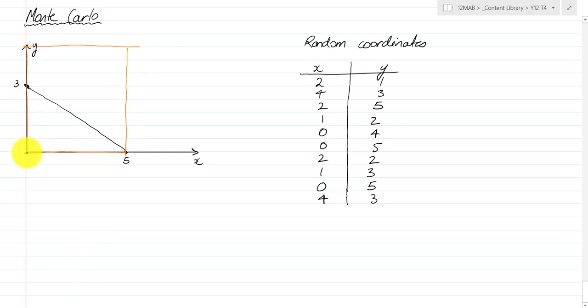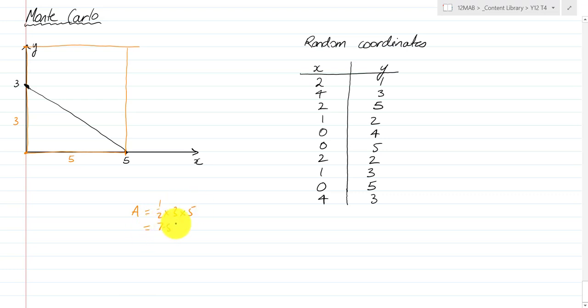What I want to do is estimate the area of this triangle. I know we can work out the area fairly trivially — this triangle has a height of 3 and a base of 5, so the area equals half times 3 times 5, which is 7.5 units squared.